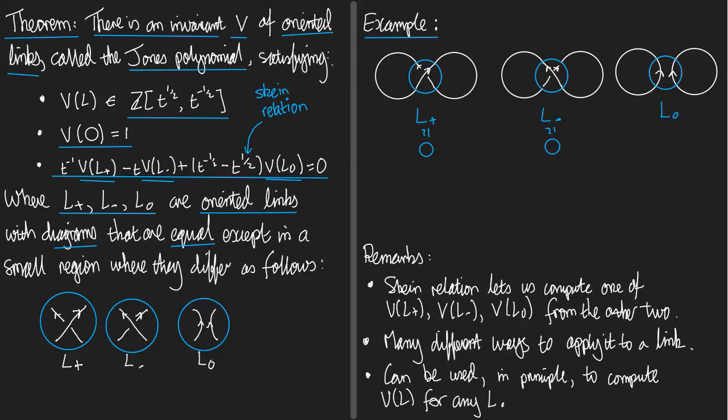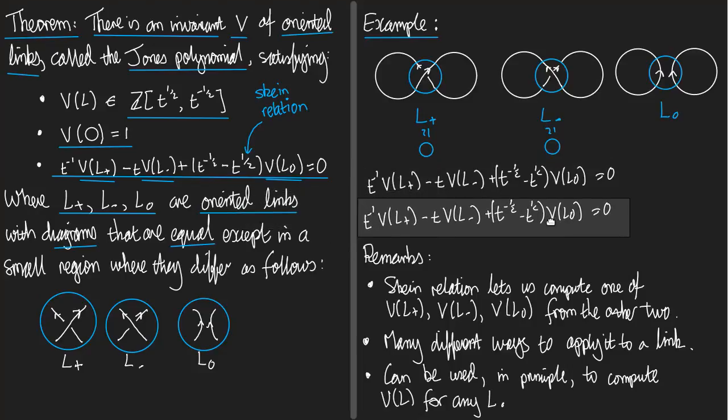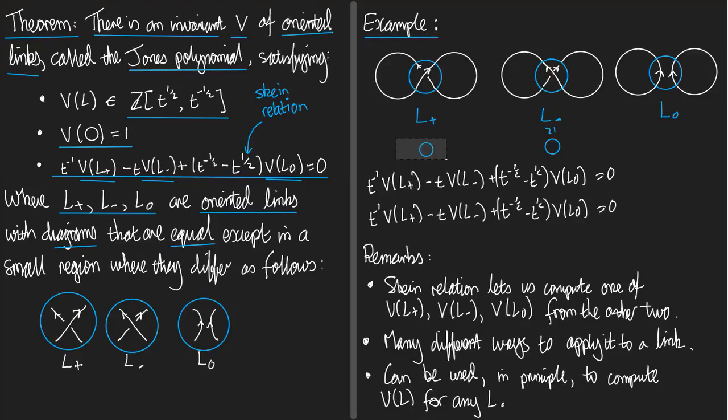So, let's do that. I know that T^-1 V(L+) minus T V(L-) plus (T^-½ - T^½) V(L0), that's equal to zero. So, what does that tell me?